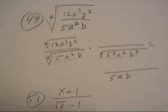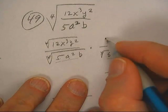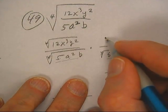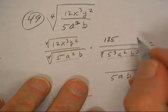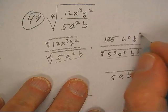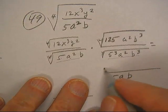Okay, but then I've got to come up here and do 125 is 5³a²b³, and of course that's fourth root.